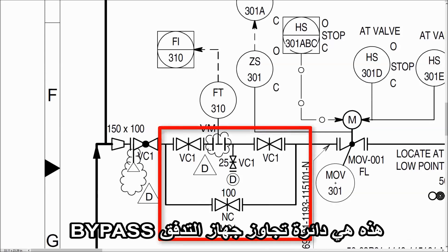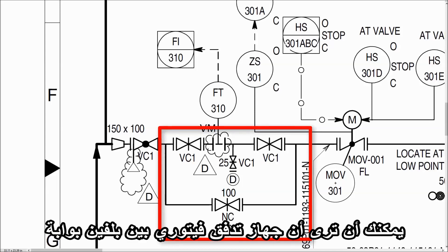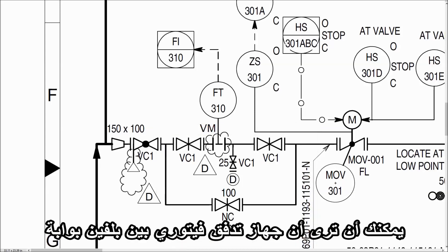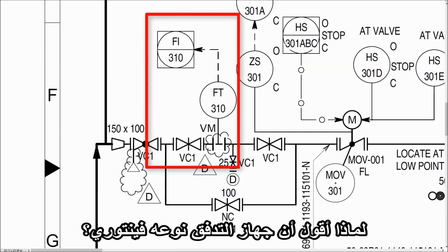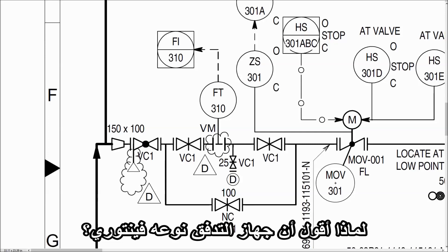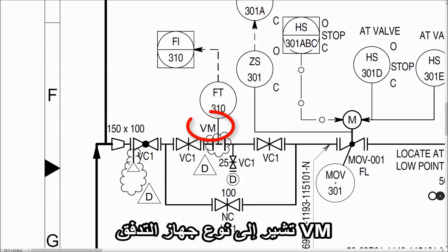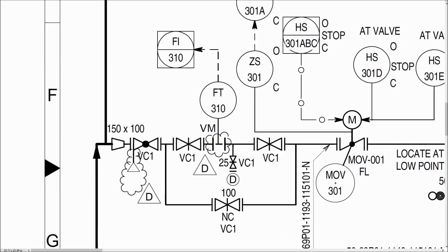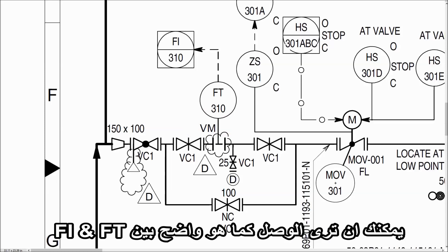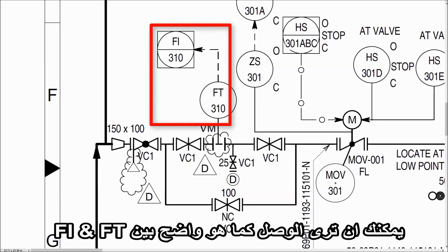This is the bypass loop for the flow transmitter. You can see that a Venturi type flow meter is provided in between the two gate valves. The letters VM indicate the type of flow meter. It gives flow indication on the control panel. You can see the connection shown between FT and FI.